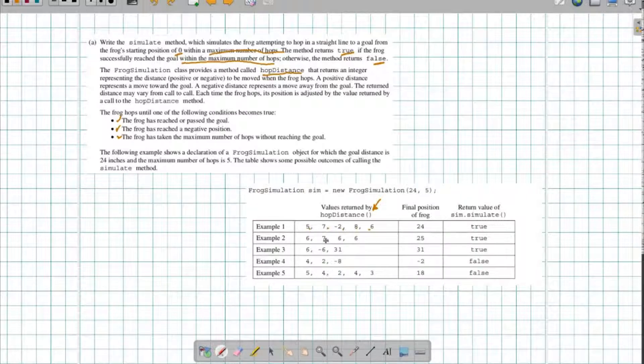Here we have 6, plus 7 is 13, plus 6 is 21, plus 6 is 19, plus 6 is 25, which gives us true. Here we've got 6, take away 6 is 0, plus 31 is 31, which is also true. Here we get 4, then 2, then a minus 8. As soon as we hit this minus 8, notice our total went from 4 to 6 to negative 2, so we stop hopping and we return false. Here the maximum number of hops we get is 5, so 5 and 4 is 9 and 2 is 11 and 4 is 15 and 3 is 18. We don't reach our target of 24 within time, we return false.